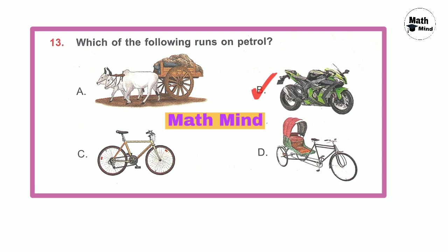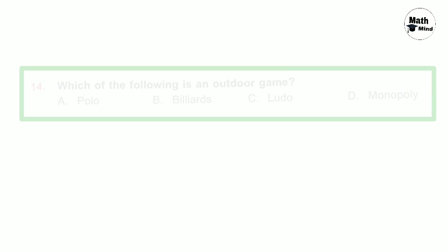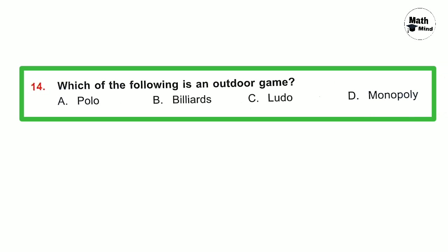Option B is correct — motorcycle runs on petrol. Question number 14: Which of the following is an outdoor game? Options are polo, billiards, ludo, and monopoly. Clearly option A is correct — polo is an outdoor game.